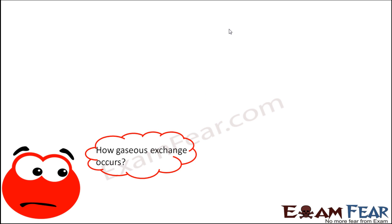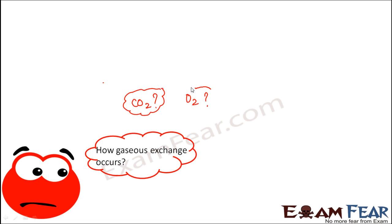Now the question that arises in your mind is how gaseous exchange occurs. We saw that during the process of photosynthesis, one of the important raw materials is carbon dioxide. So the question is: from where is this carbon dioxide coming inside the plant, and how is the plant giving out the oxygen which is produced as a result of photosynthesis?